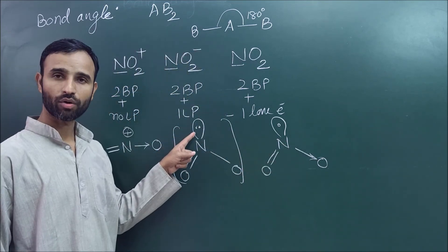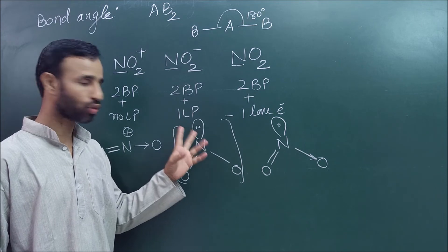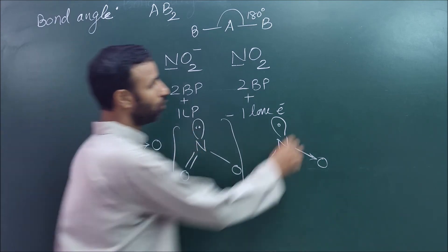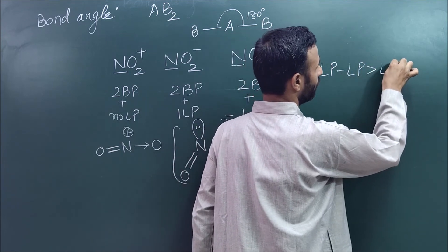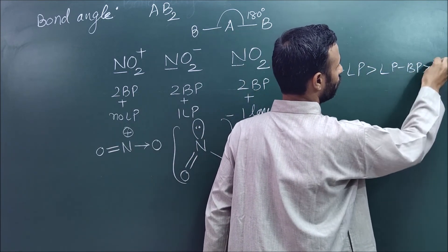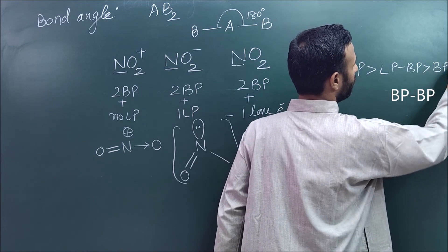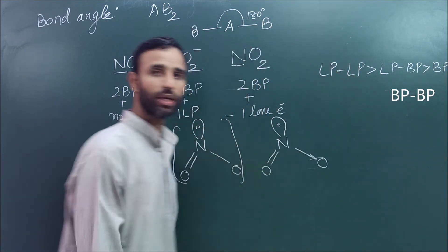Now you know, according to valence shell electron pair repulsion theory, lone pair-lone pair repulsion is greater than lone pair-bond pair repulsion, which in turn is greater than bond pair-bond pair repulsion.